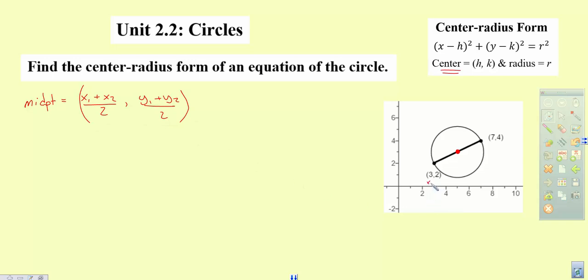Alright, so we're going to let that be our x1 and our x2 and our y2, so when we plug our numbers in, that would be 3 plus 7 divided by 2, and then that would be 2 plus 4 divided by 2.